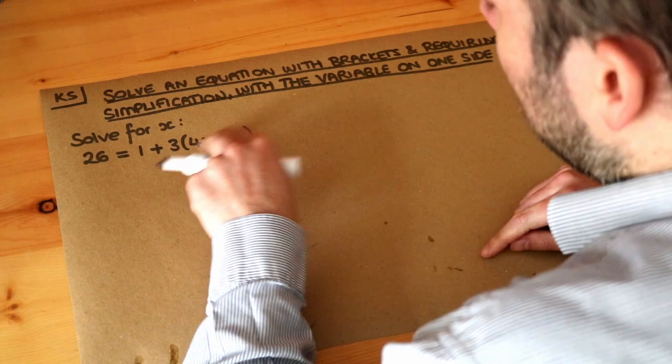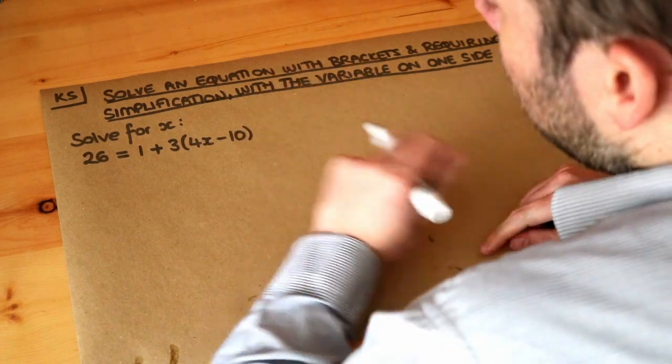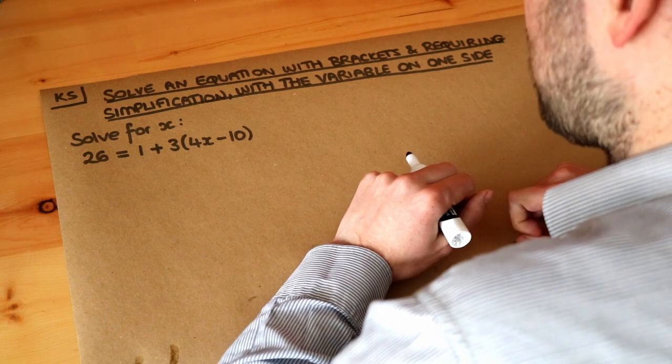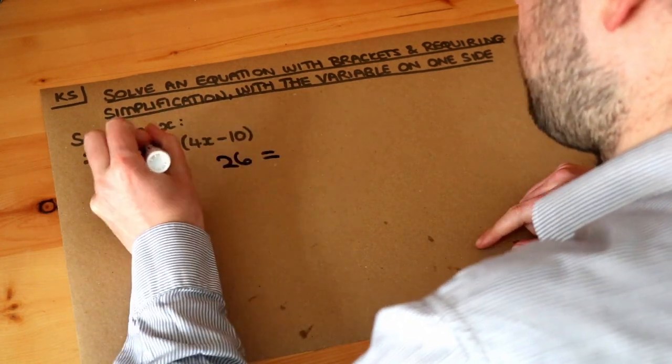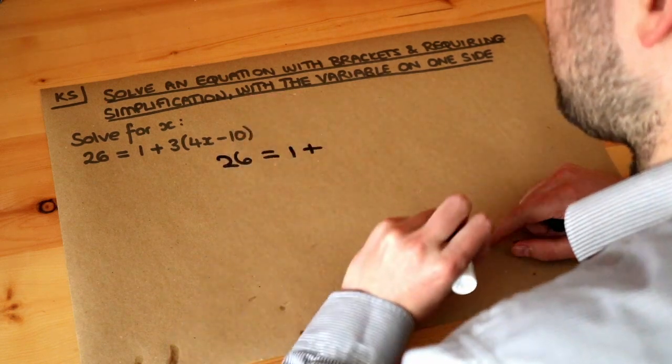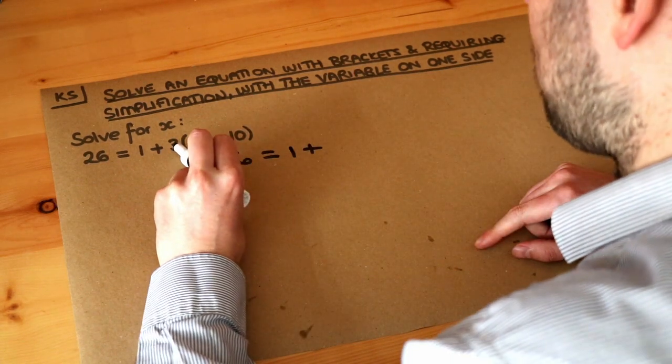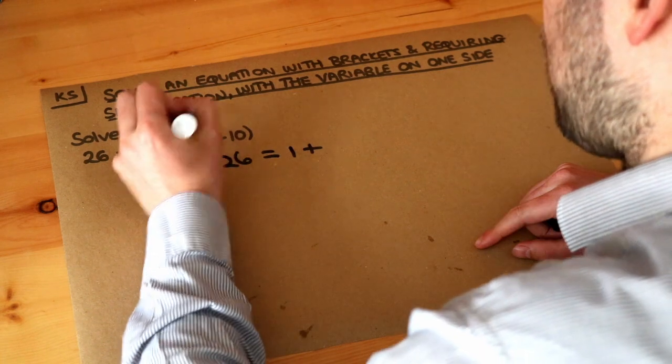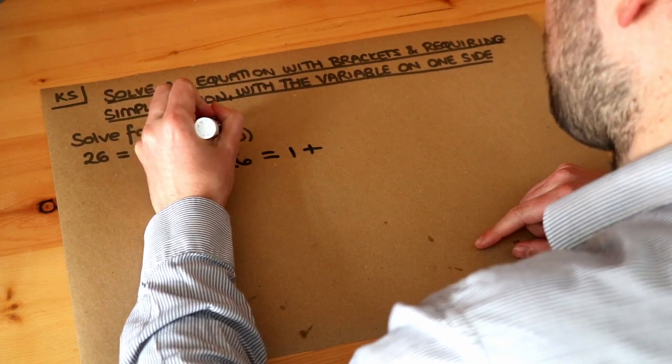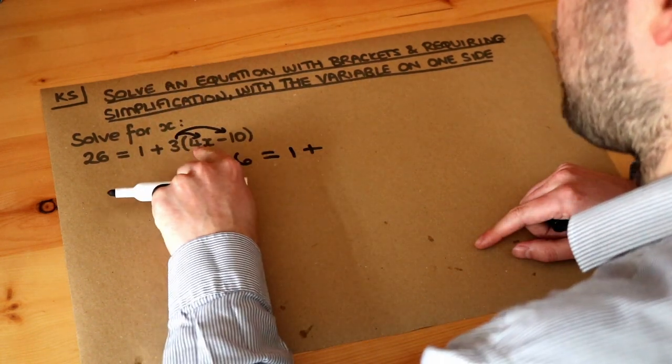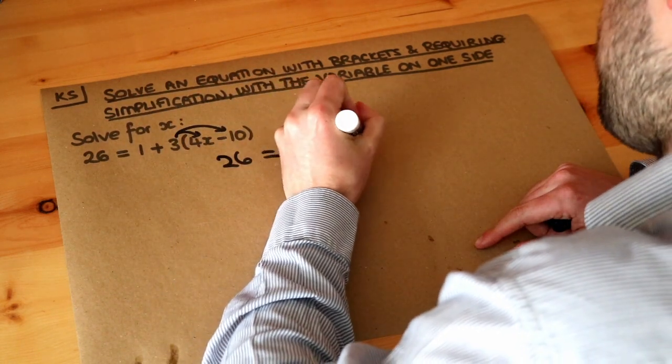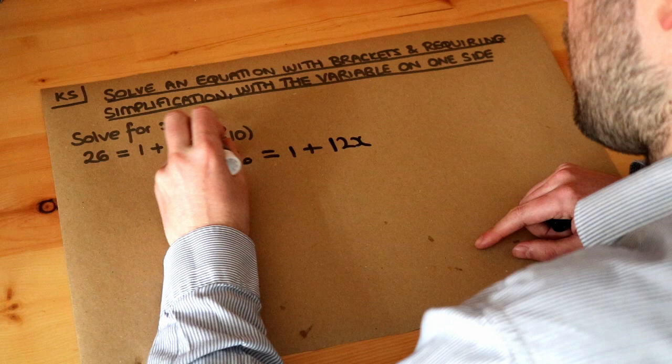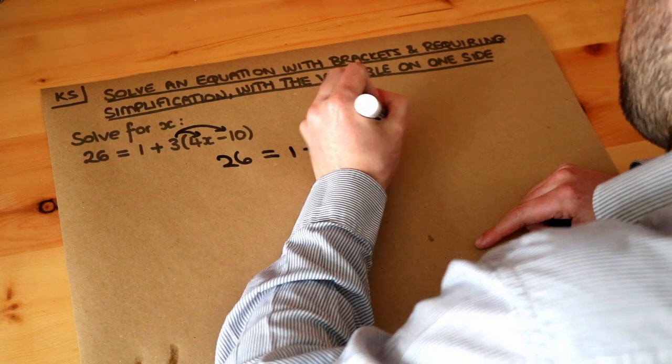Now basically, if you have brackets in an equation, generally the best strategy is to expand those brackets. So if I expand the brackets, we've got 26 equals 1 plus, remember to expand brackets you times the thing in front of the brackets by each of the things inside the bracket. So we do the 3 times the 4x, 3 times 4 is 12, so it's 12x, and then we do 3 times negative 10, which is minus 30.